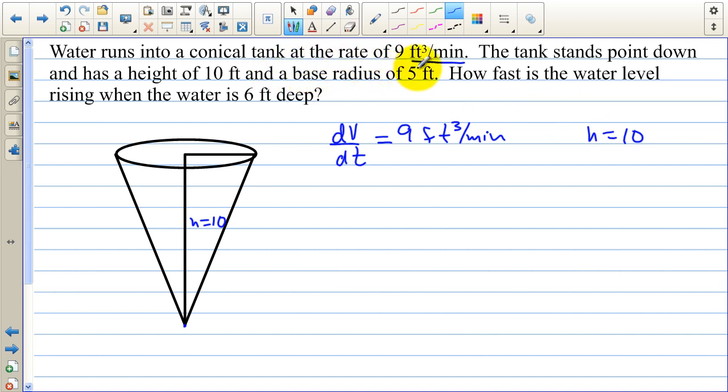And a base radius of 5 feet. So here's the base radius right here and our radius overall of the entire cone is 5. And these are both feet. How fast is the water level rising? How fast? So dh dt. That's the question. How fast is it rising when the water is 6 feet deep? When h equals 6. So the overall height is 10, but we want to know how fast is the height changing when the height is 6.